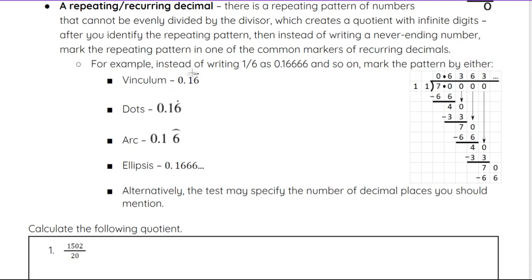A bar over the top means it's repeating — specifically that only the 6 is repeating in that example. A dot over the 6 also means only the 6 is repeating. An arc over the 6 means only the 6 is repeating. Or we can use the ellipsis — dot, dot, dot — indicating that the pattern continues: 6, 6, 6, so on and so on.